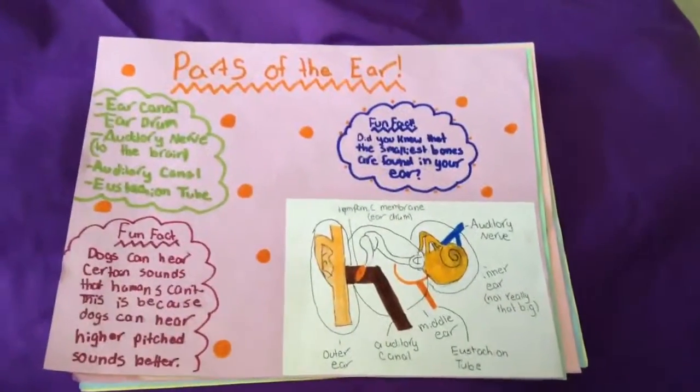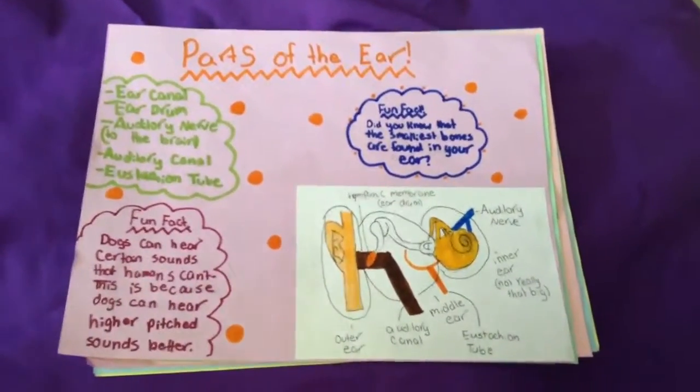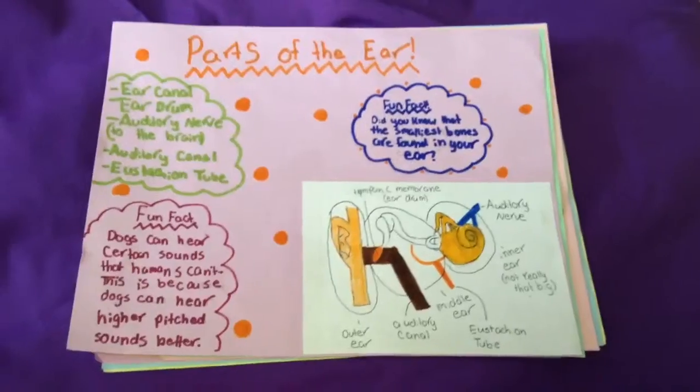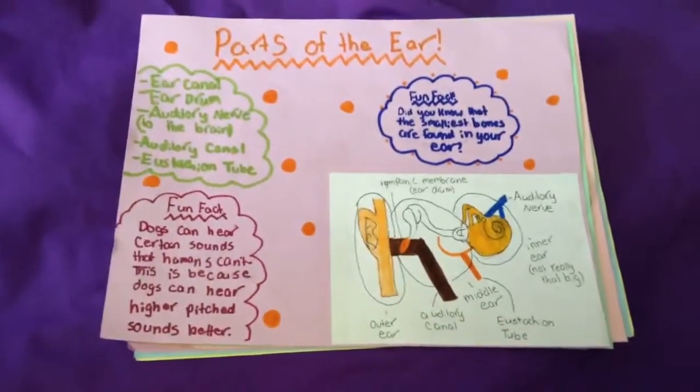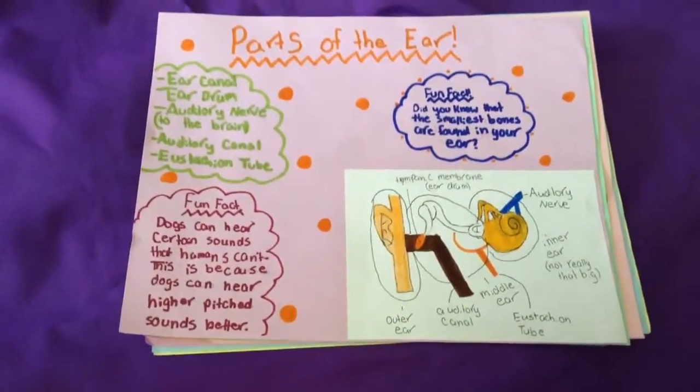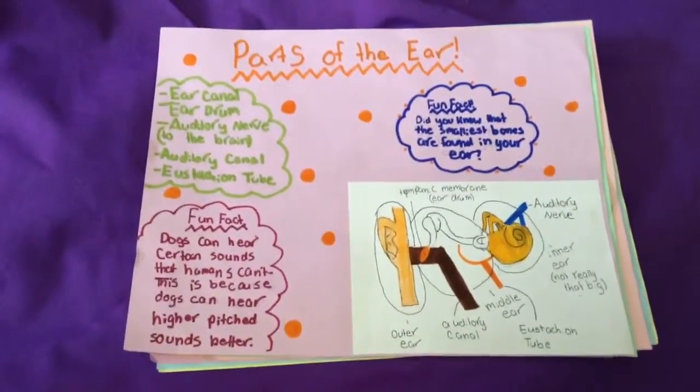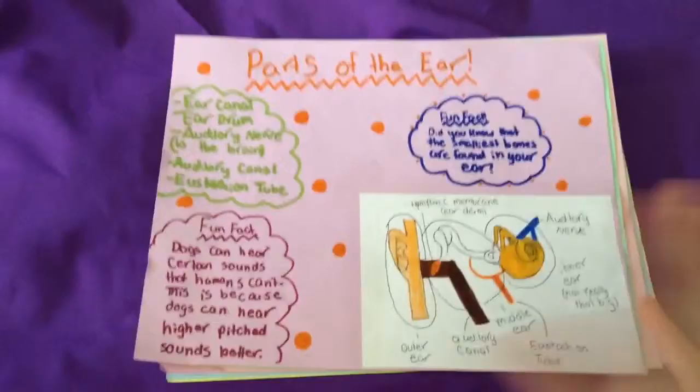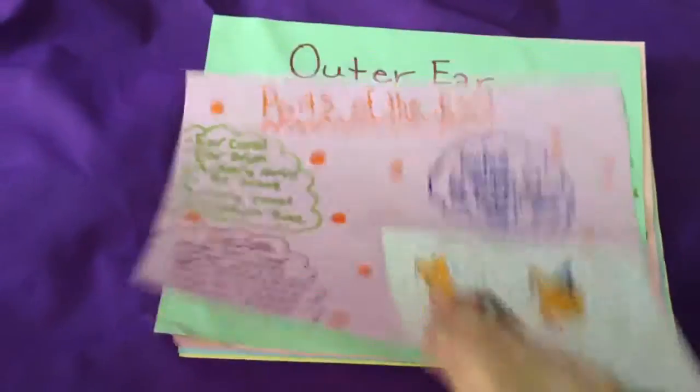Fun facts. Did you know that the smallest bones are found in your ear, and dogs can hear certain sounds that humans can't? This is because dogs can hear higher pitch sounds better.